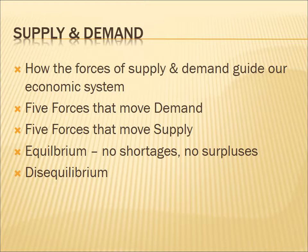Next, we're going to talk about equilibrium. When you put the supply curve and the demand curve on the same graph, the point at which they intersect is the point of equilibrium. At the price indicated there, the quantity demanded will exactly equal the quantity supplied — the market is said to be in equilibrium. Finally, we'll talk about what happens when the price does not reach equilibrium, when it is either above or below, creating a surplus or a shortage.